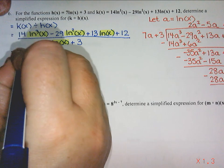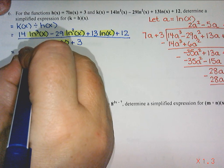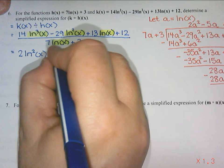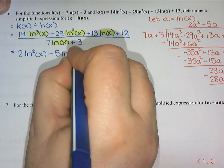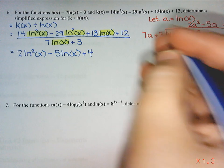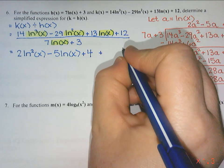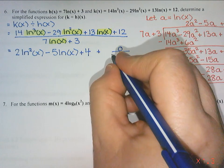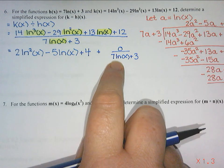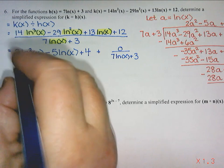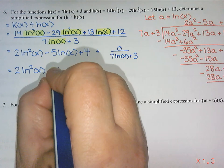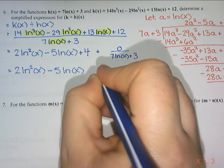So this is going to be 2 ln squared x. And then minus 5a, so minus 5 ln x. And then plus 4. And then if there was a remainder, I would plus the remainder, which is 0, out of whatever the denominator here is, so 7 ln x plus 3. But 0 divided by anything is 0. And 4 plus 0 is just 4. So this is just 2 ln squared x minus 5 ln x plus 4.